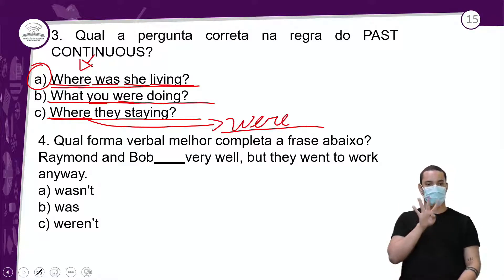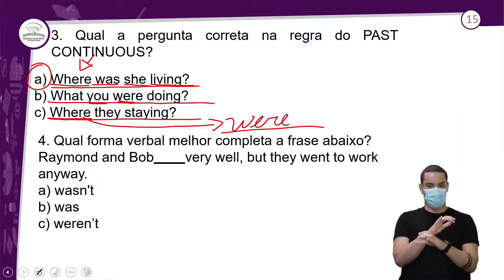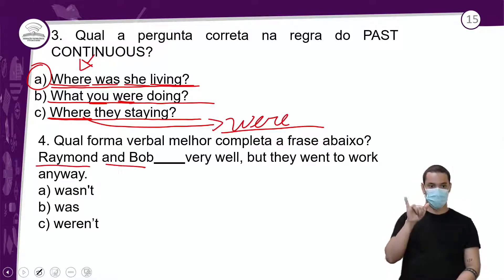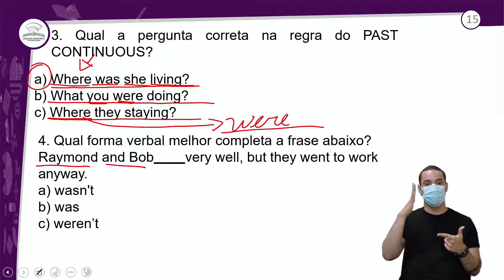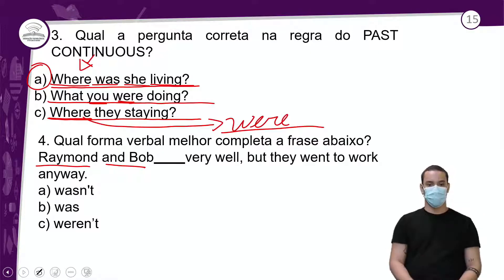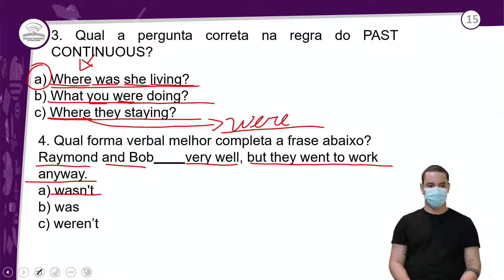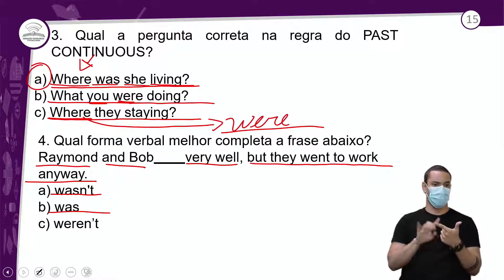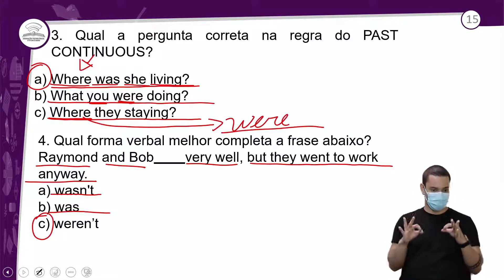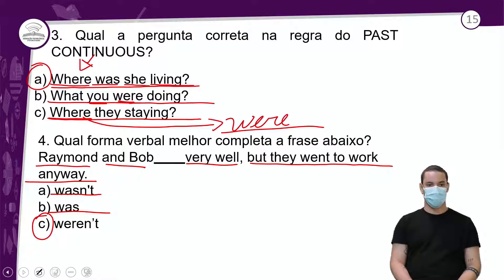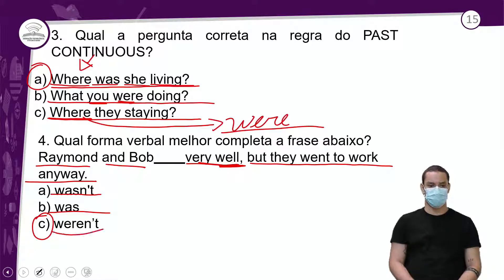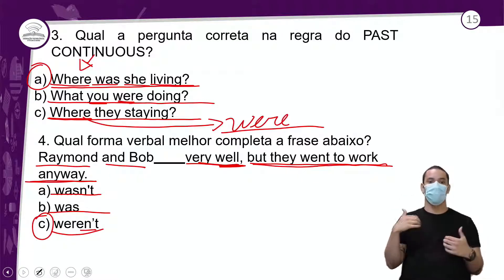Questão 4: Raymond and Bob — são duas pessoas, então uso plural. 'Raymond and Bob weren't feeling very well, but they went to work anyway.' A opção A 'wasn't' é singular — não serve. A resposta correta é C: 'weren't' — plural negativo. Eles não estavam se sentindo muito bem, mas foram trabalhar assim mesmo.